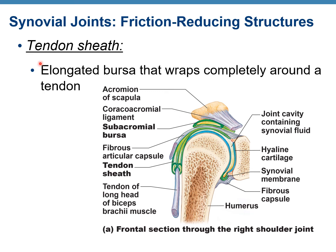Another structure is the tendon sheath, which is similar to a bursa — it's an elongated bursa that wraps completely around the tendon. You can see this is the tendon of the biceps brachii muscle, and there is a structure that wraps around it — that's the tendon sheath. It's similar in structure to the bursa because it also has synovial fluid inside. It protects the ligaments, muscle, and skin from friction, from rubbing on hard surfaces, and from tearing.